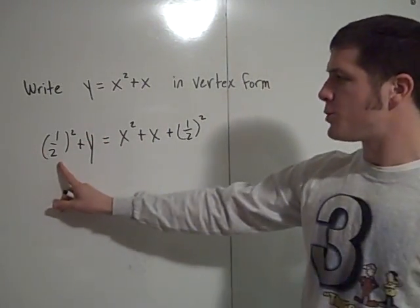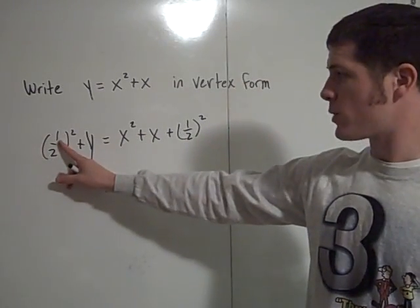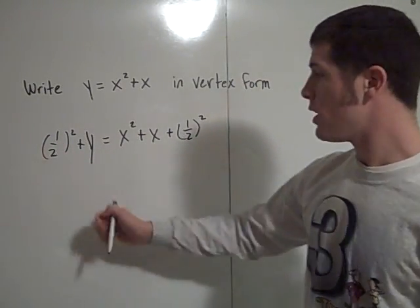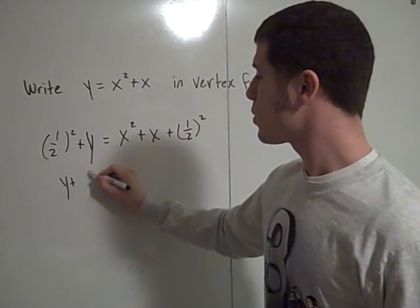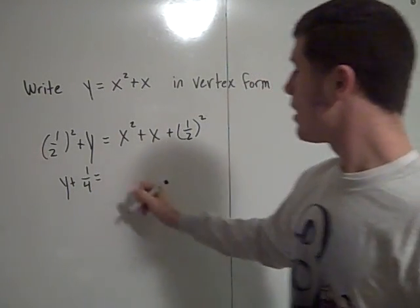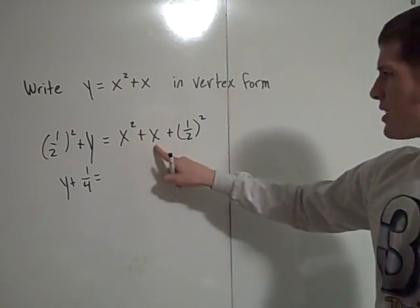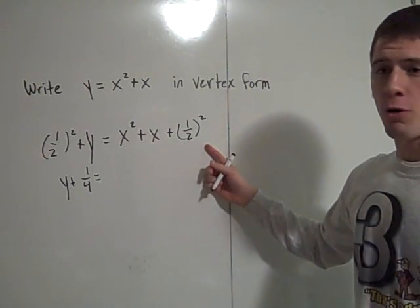1 over 2 squared is just 1 fourth, right? 1 squared is 1, 2 squared is 4, so this is y plus 1 fourth equals x squared plus x plus 1 fourth.